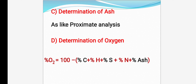Determination of oxygen: how to determine percent oxygen? The same way we found out percent fixed carbon, you can find percent oxygen. Percent oxygen equals 100 minus the percentage of carbon, percentage of hydrogen, percentage of nitrogen, percentage of sulfur, and percentage of ash. So, 100 minus the percentage of all these will give you percent oxygen.